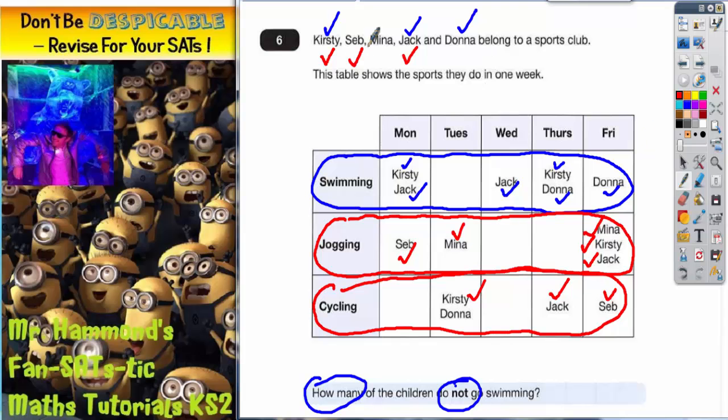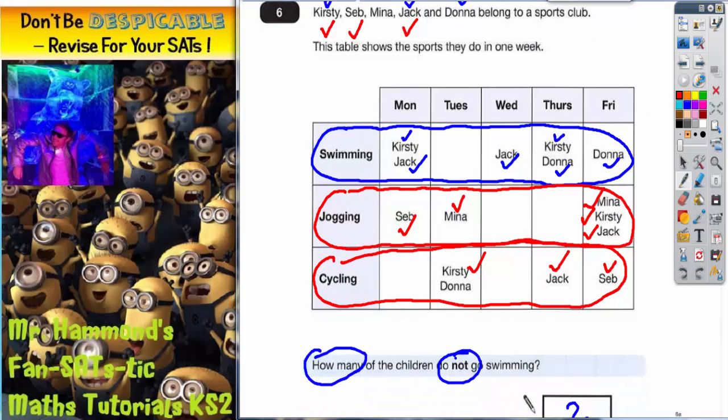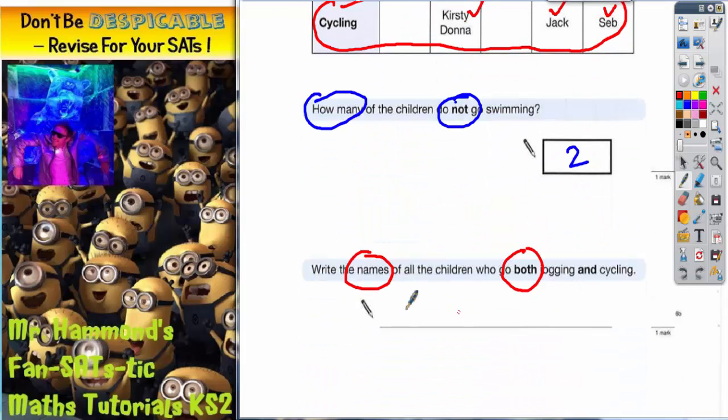So as you can see, the three people I've got ticked are Kirstie, Seb and Jack. They are the people that do both. So they are the names that need to get written on this line. Kirstie, Seb and Jack. And that is the answer to the question.